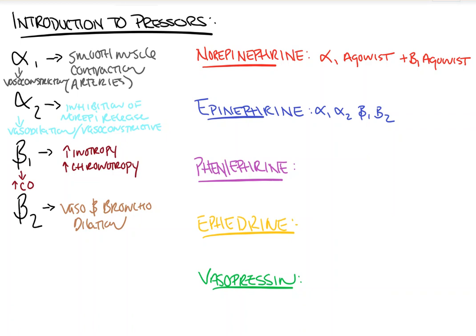Phenylephrine, known as neosynephrine, is primarily an alpha-1 agonist, making it a very good vasoconstrictor used to increase blood pressure. We commonly use it in the operating room in boluses of about 100 micrograms at a time, but may also use it as a drip in the OR or ICU. Some caution is warranted: since cardiac output equals heart rate times stroke volume, as we increase vascular tone and venous return, it can cause a reflexive bradycardia. This makes it a good drip for patients with afib and rapid ventricular rate, but it should not be used in patients who are baseline bradycardic.